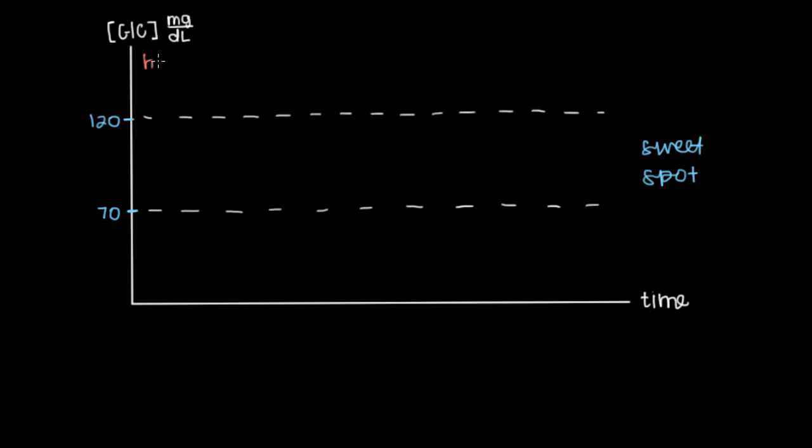Because if we go any higher than 120, then we end up having a condition that's called hyperglycemia, which just means a lot of glucose in the blood. If we have hyperglycemia for a long period of time, that can lead to what's referred to as eye, nerve, and kidney disease. And we can go into a lot more detail about how this happens, but just understand that having a lot of glucose in your blood can cause changes to these structures to make them not work as well.